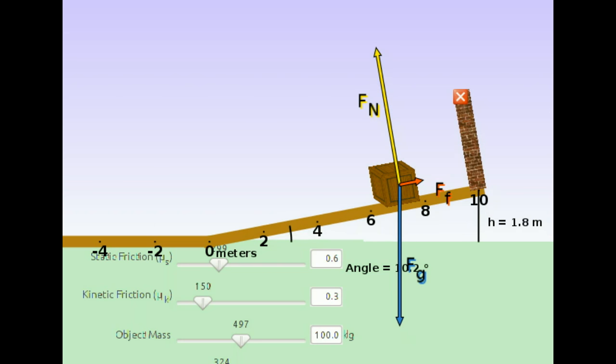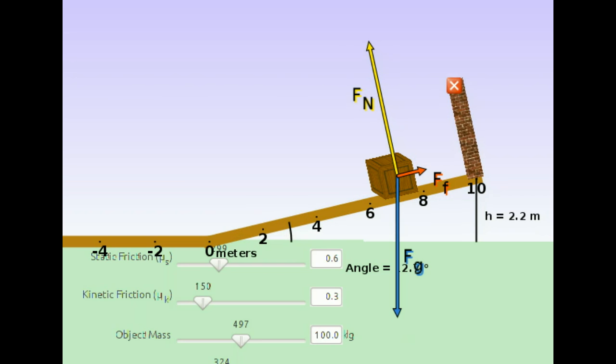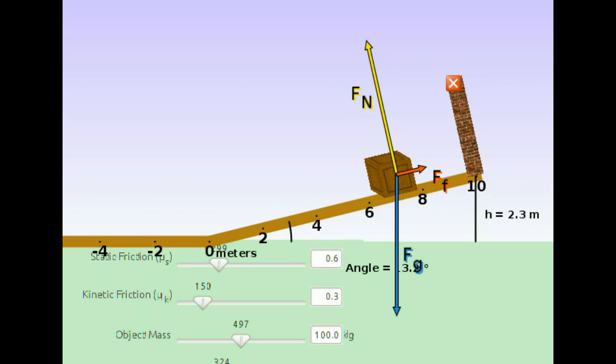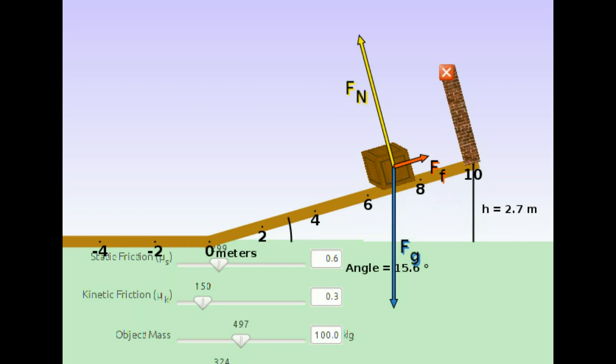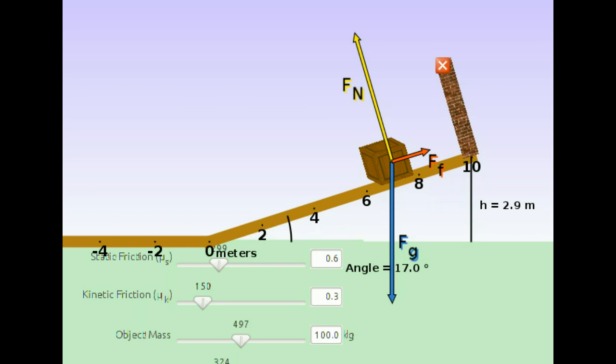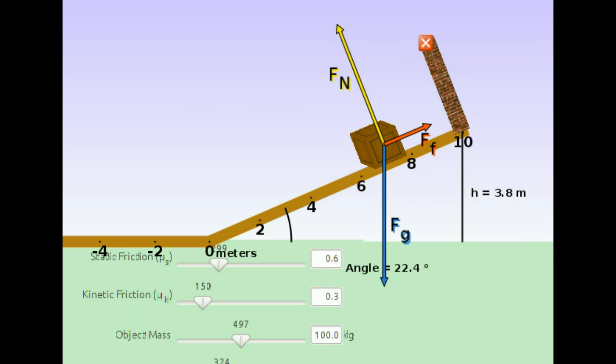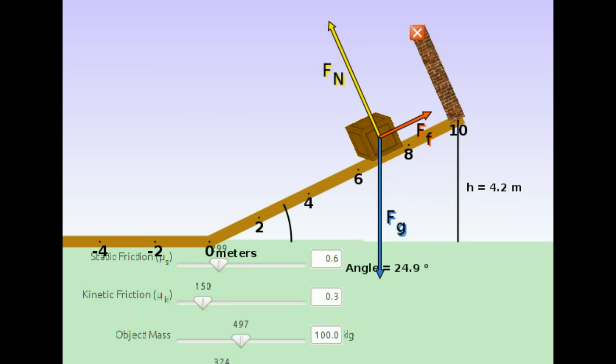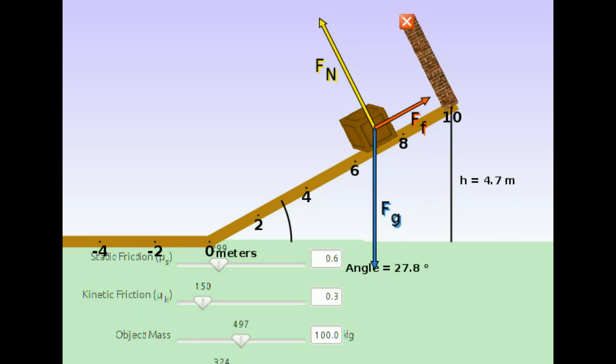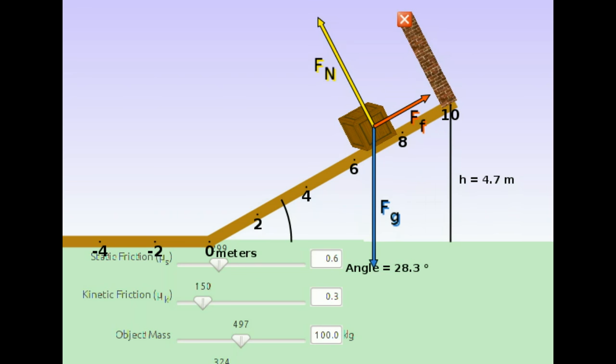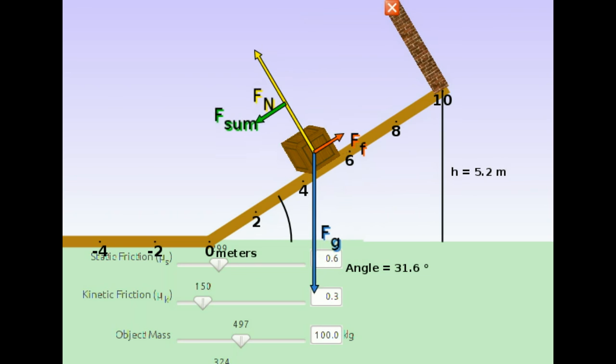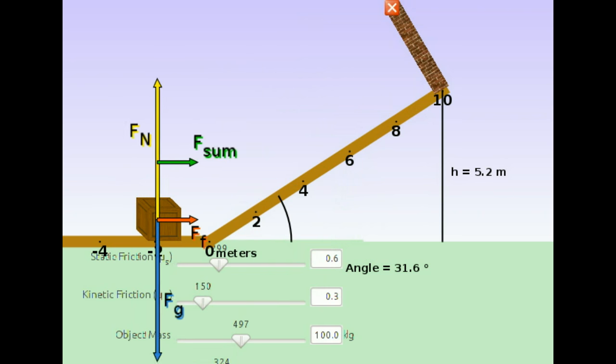We know that as long as the box is stationary, the vector sum of those two contact forces has the same magnitude as the gravitational force on the box. And so that means they have to dynamically adjust. Both of them change magnitude with every new angle. But then there's some angle at which something changes. Suddenly the box starts to slide down the slope. And importantly, not only does it slide down the slope, it accelerates down the slope.